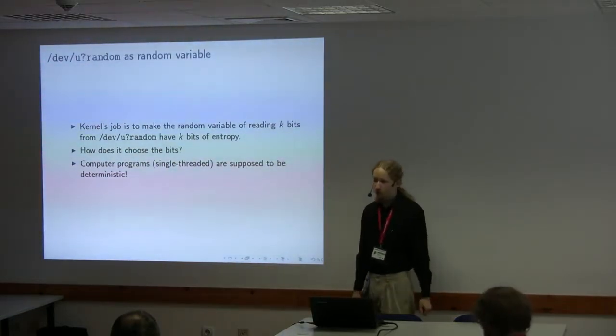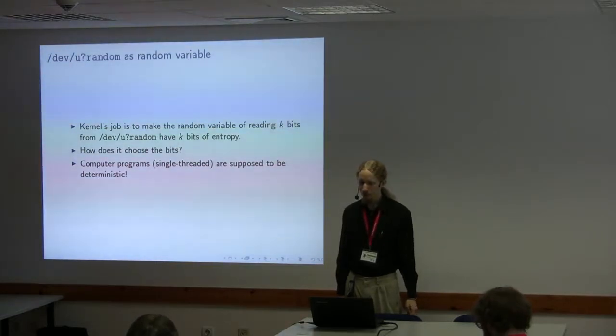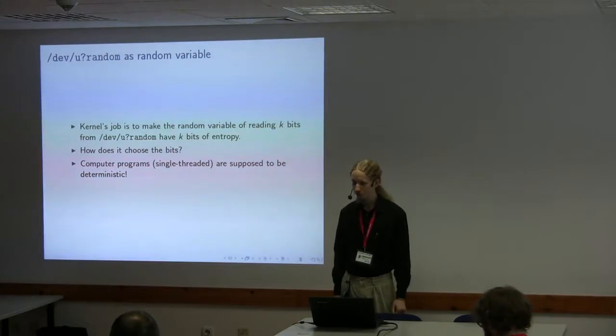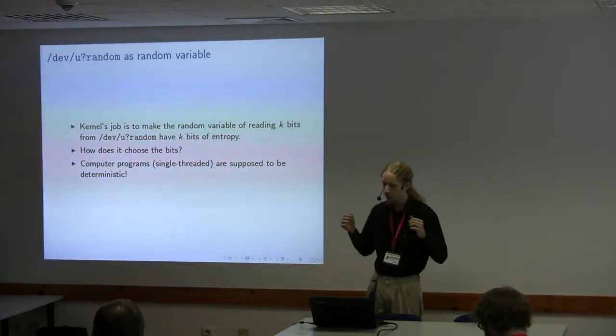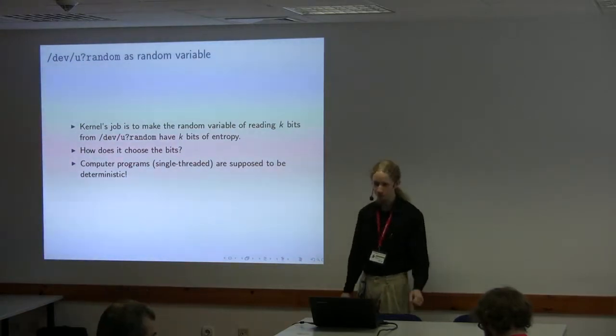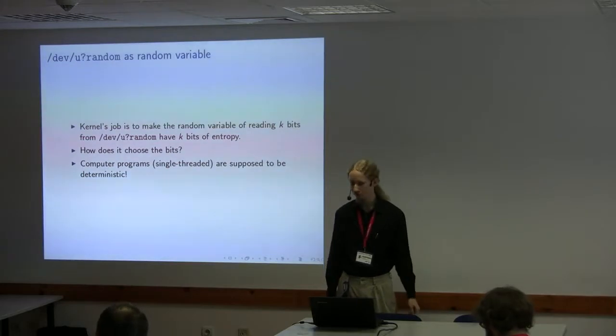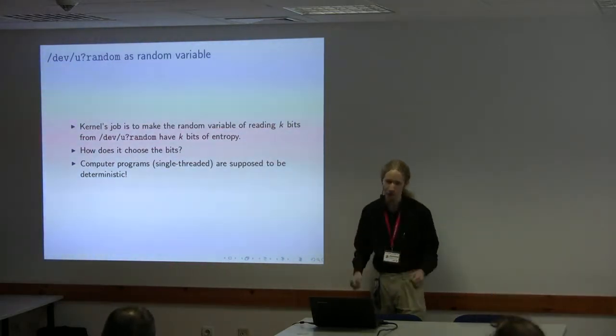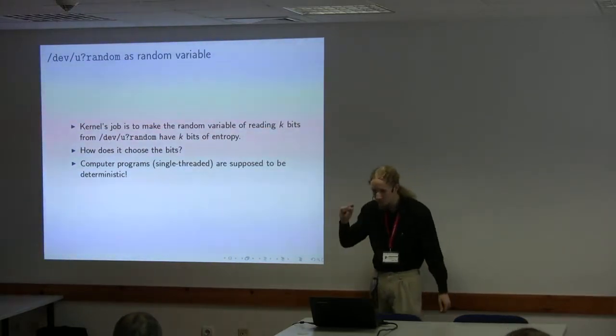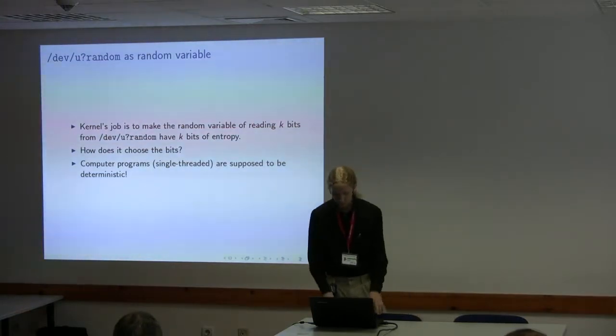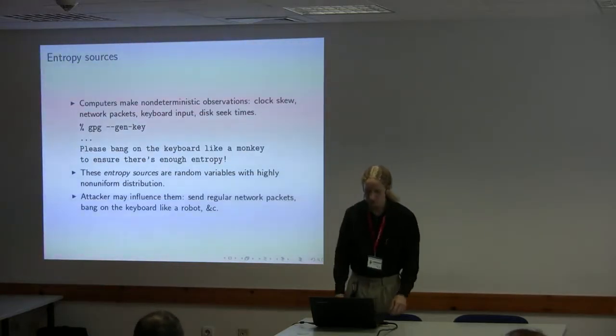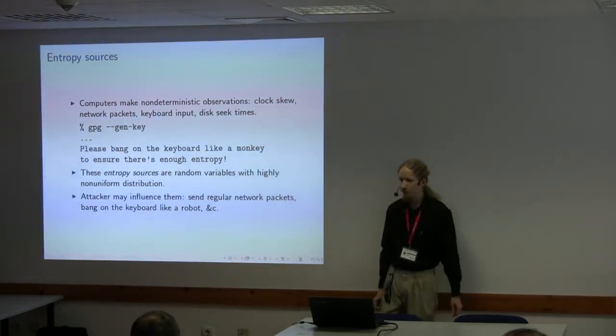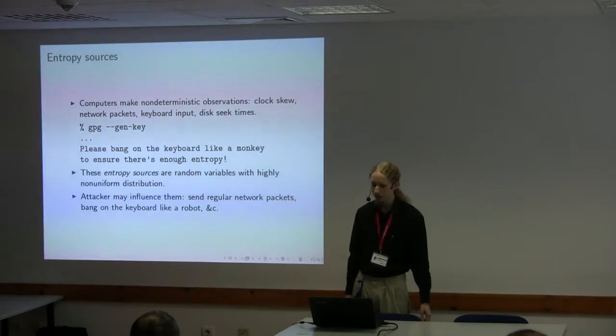The kernel's job with /dev/random and /dev/urandom is to make reading k bits from the device, that physical process of reading k bits, if you model it as a random variable, have k bits of entropy. It's supposed to be very hard for an attacker to predict what the bits are. If you draw 128 bits, the attacker has a very, very small chance of guessing right. Now, how does the kernel choose which bits to produce? Of course, if the kernel is a nice single-threaded computer program, then it should be deterministic, but kernels have access to physical devices, and they make various non-deterministic observations of the physical devices that are attached to them.